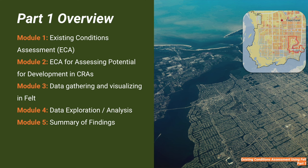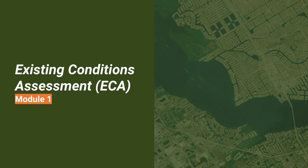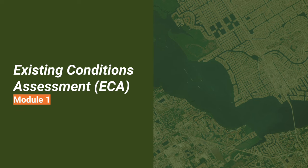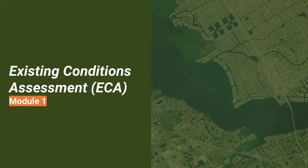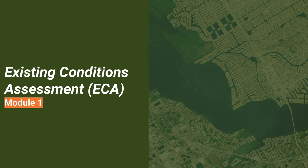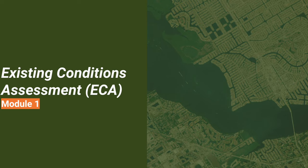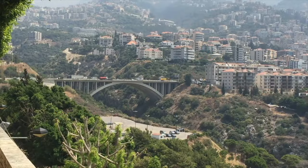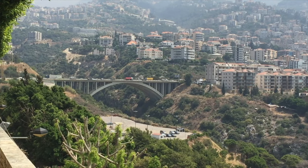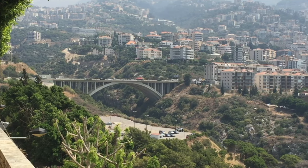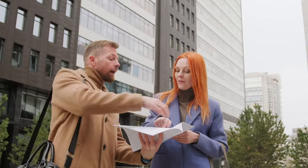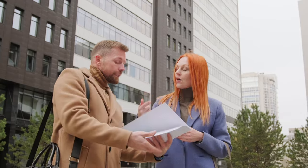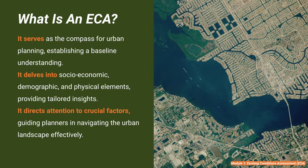Let's start by understanding what an existing conditions assessment is. Existing conditions assessment, or ECA, serves as the compass of urban planning — it's about understanding where you are, establishing the groundwork before charting a course for the future. ECA meticulously explores the intricacies of the present urban environment, analyzing essential factors like socio-economic, demographic, and physical elements.